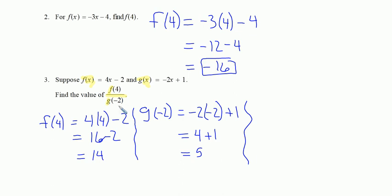So if I take f of four, which is 14, and divide by g of negative two, which is five, I'm going to get 14 fifths. So f of four divided by g of negative two is 14 fifths. 14 fifths does not reduce, so I can stop right there.